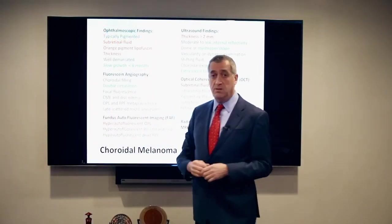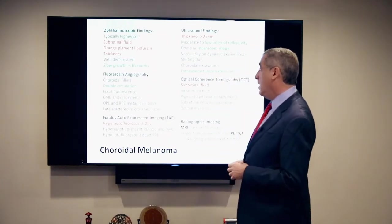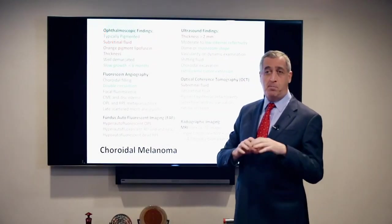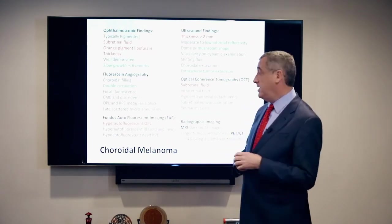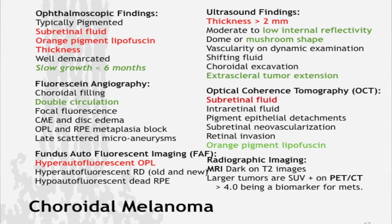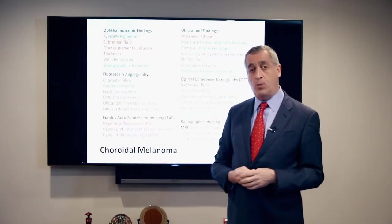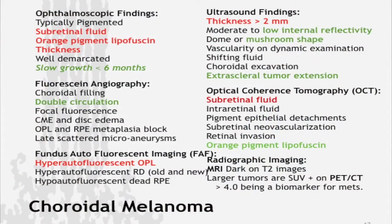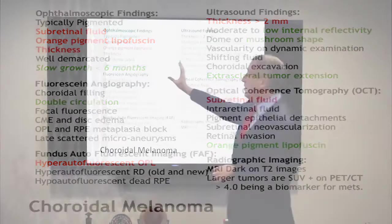On the angiogram, we're looking for a double circulation or intrinsic circulation within the tumor — form vessels are only documented in a couple of these tumors and the pattern helps us differentiate them. The presence of orange pigment, hyper-autofluorescent on fundus imaging, is really important and allows us to see smaller amounts than we could just by looking in. Statistically, if a tumor is more than 2 millimeters thick, it's less likely to be benign.